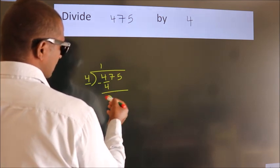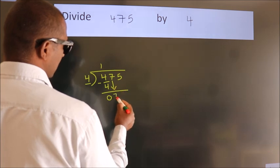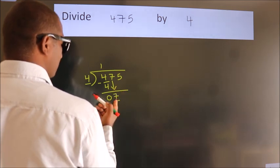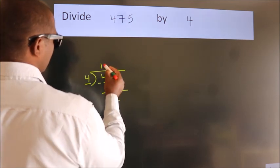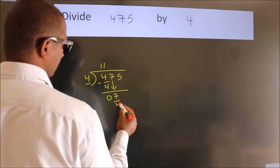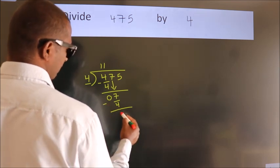After this, bring down the beside number. So 7 down, so 7. A number close to 7 in 4 table is 4 once, 4. Now we subtract, we get 3.